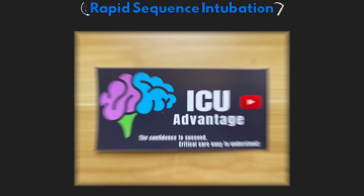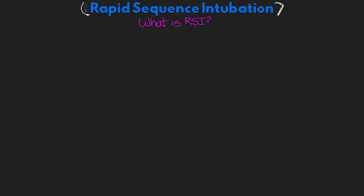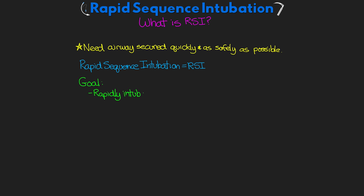So let's start off talking about what RSI is. There are definitely times when we need to get an airway secured quickly and as safely as possible. In these times we use something called Rapid Sequence Intubation, or commonly referred to as RSI. Our goal with RSI is to rapidly intubate a patient while also minimizing the risk of aspiration during the intubation attempt.